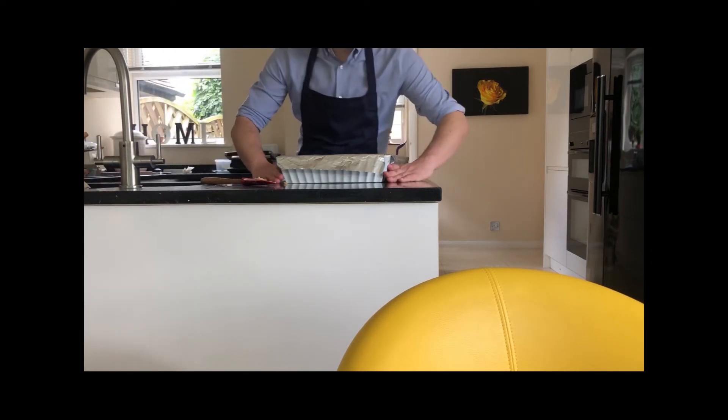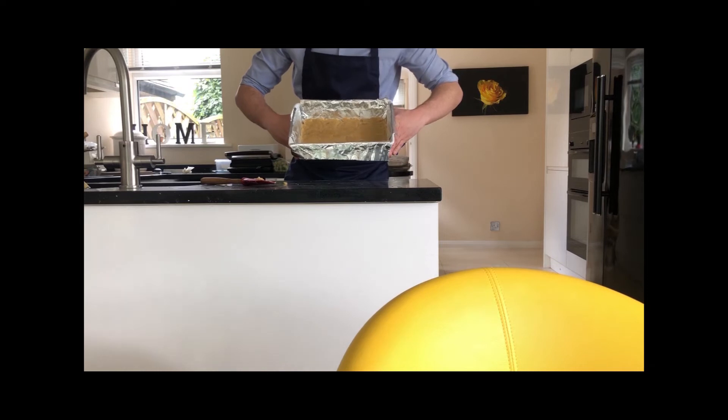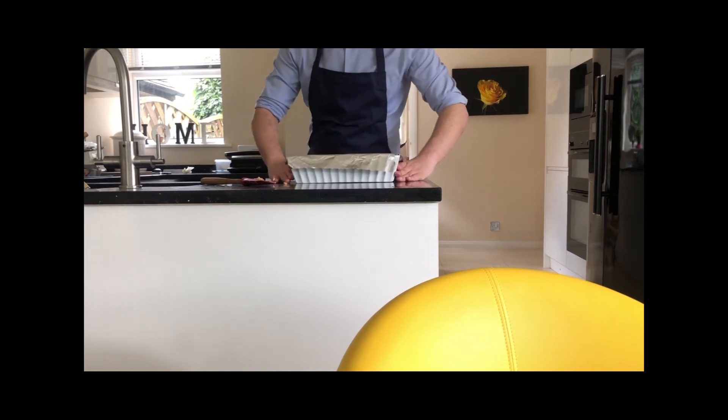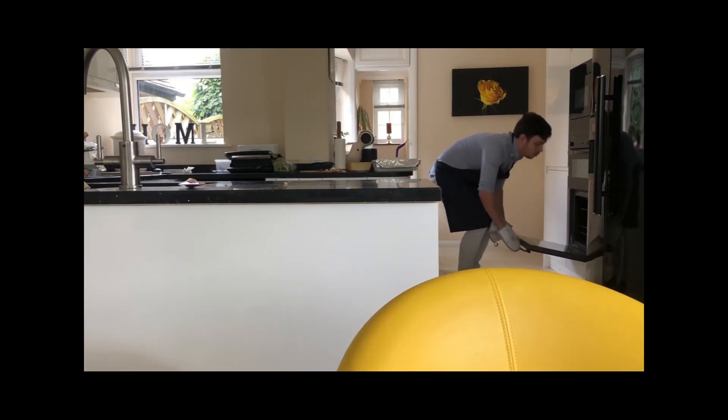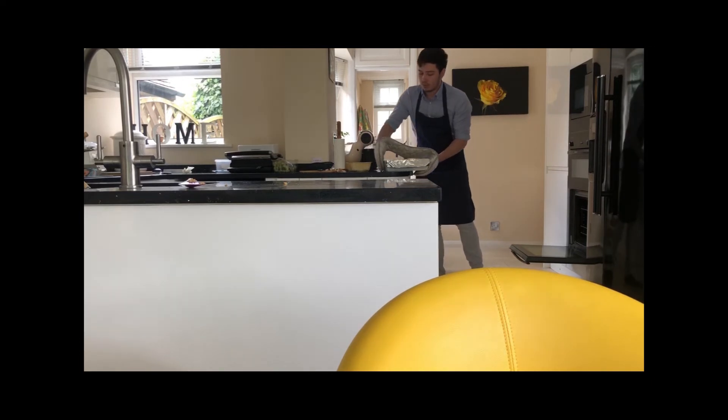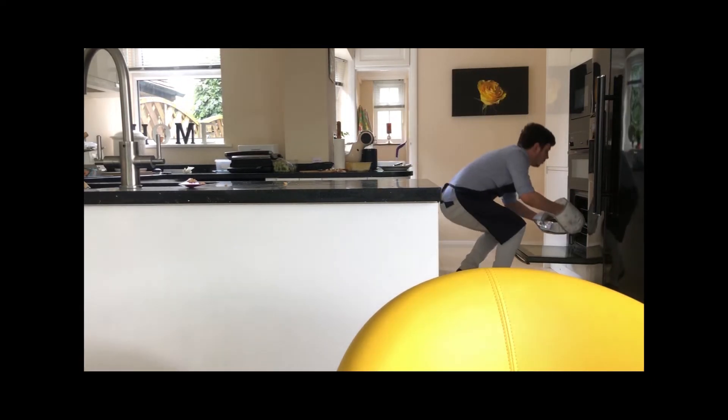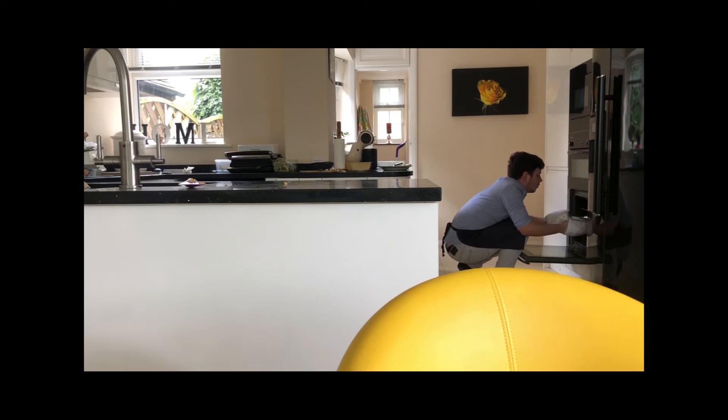At this point I would sprinkle some demerara sugar. Put your shortbread into a preheated oven at 170 degrees for about 18 to 20 minutes.